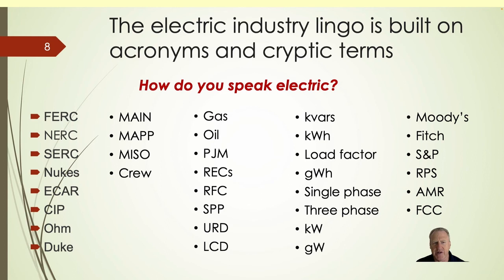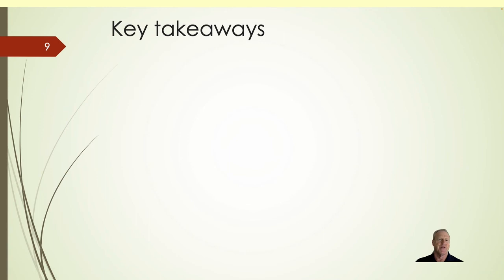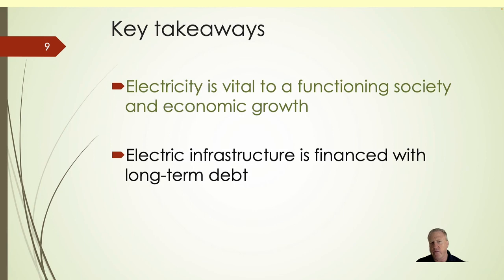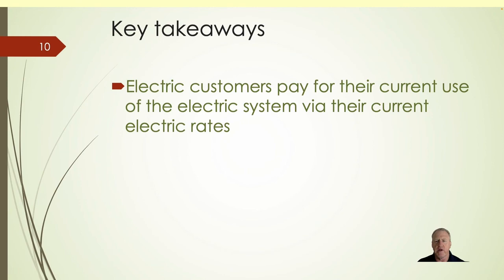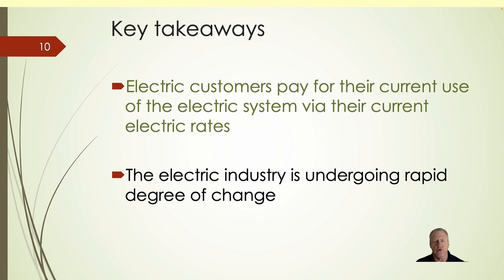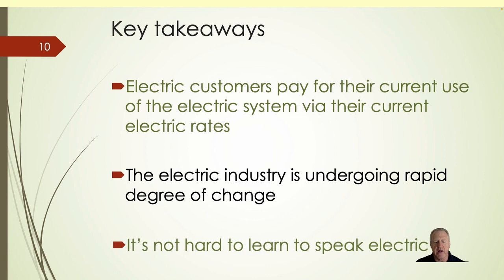Our key takeaways from this segment: electricity is vital to a functioning society and economic growth. The infrastructure we build to serve our customers is financed with long-term debt that has to be repaid by customers. Electric customers pay for their current use of the electric system via their current electric rates, which makes it important that accounting captures all costs of operations and delivery to the end user — they pay for the infrastructure, the electricity generated, all support functions, and all costs of running the business. The electric industry is undergoing rapid change, but accounting remains a bedrock throughout all of it.